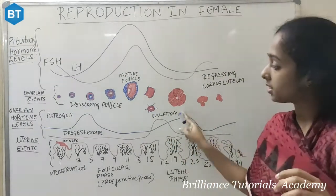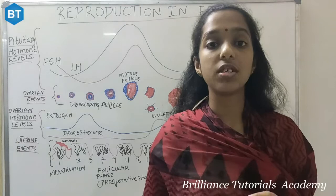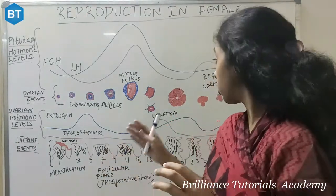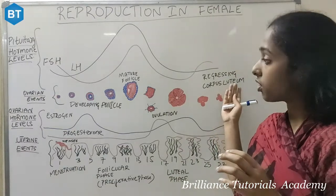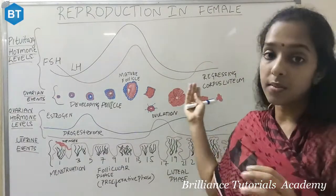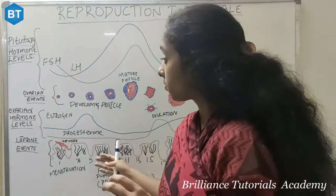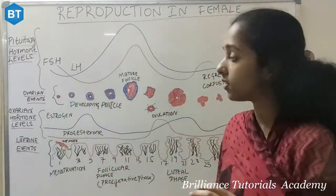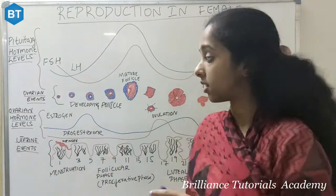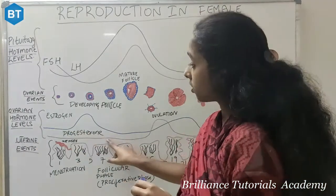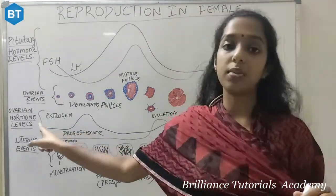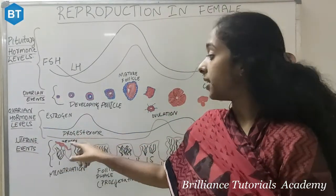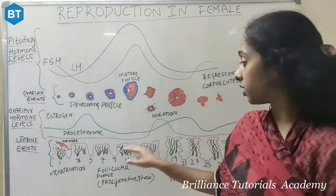Corpus luteum forms after the menstruation cycle starts in the female reproductive tract. Then we look at ovarian hormone levels. We have two subjects here: estrogen and progesterone. Estrogen regulates the blood flowing in the uterine wall. Progesterone is responsible for making less blood in the uterine tissue.